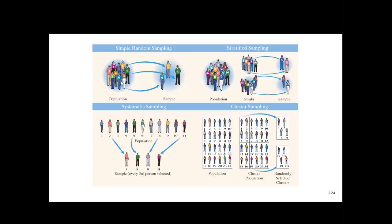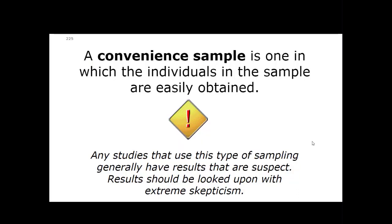To recap: simple random sampling takes people at random from the population. Stratified sampling breaks the population into groups — like male and female — then does simple random sampling within each group. Systematic sampling picks every nth person going through a particular avenue. Cluster sampling uses naturally occurring groups and pulls everybody in that group into the study.